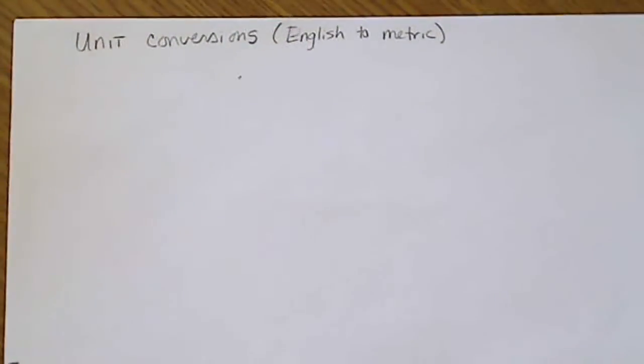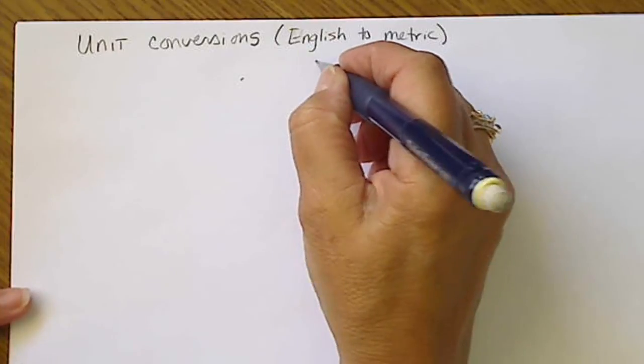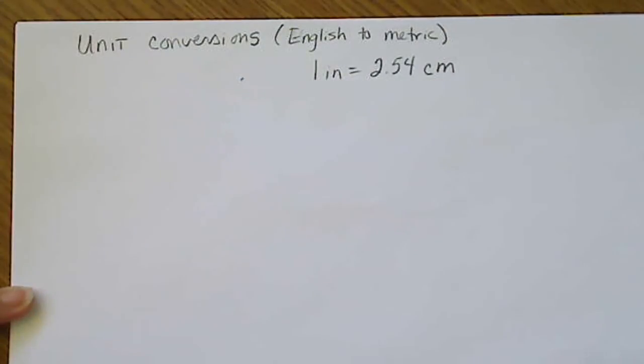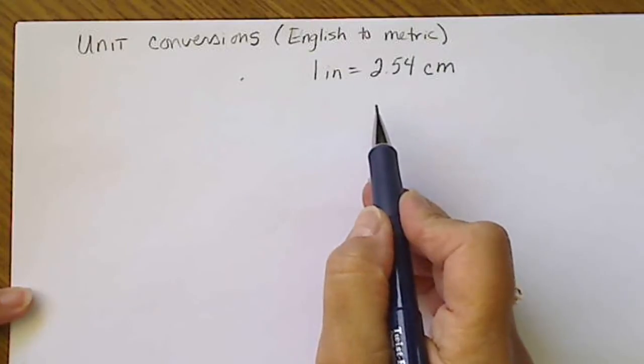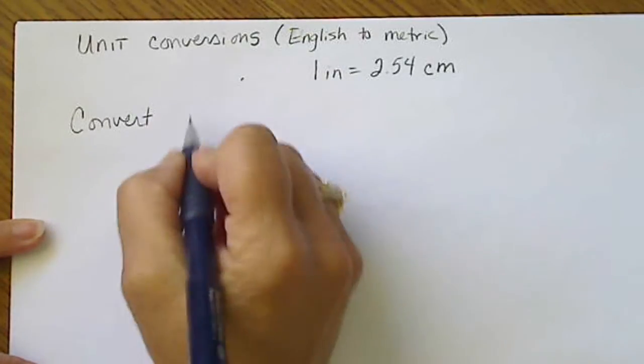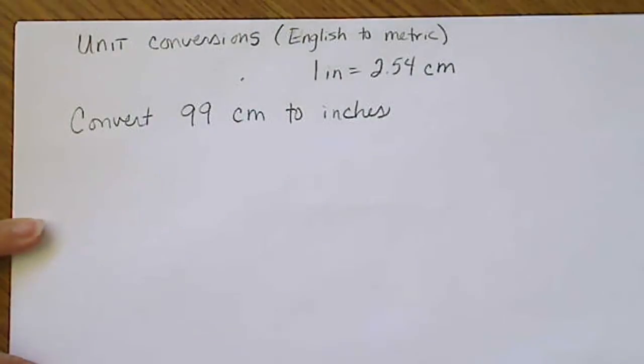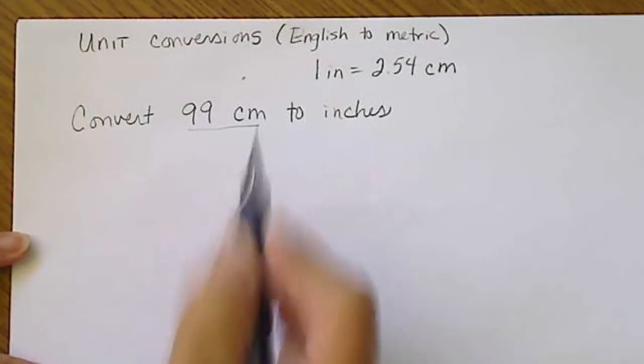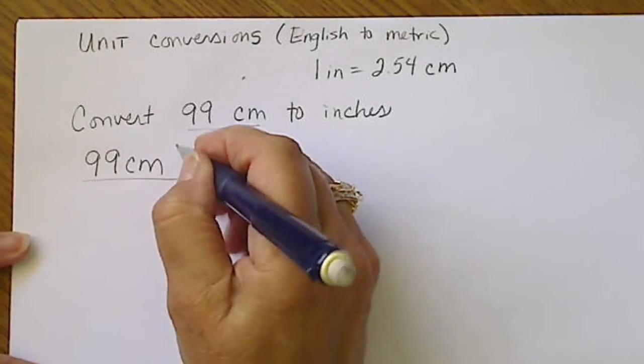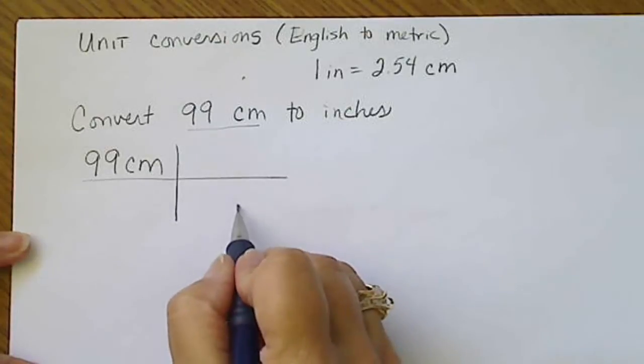We're going to practice this with things that we're not necessarily sure when do I multiply and when do I divide. For example, we would use another conversion that's in the back of the book, and that is 1 inch equals 2.54 centimeters. This is an equality and we are going to use this to convert, for example, from centimeters to inches. Convert 99 centimeters to inches. The key to doing this is to always write down the number and the unit. Write down 99 centimeters.